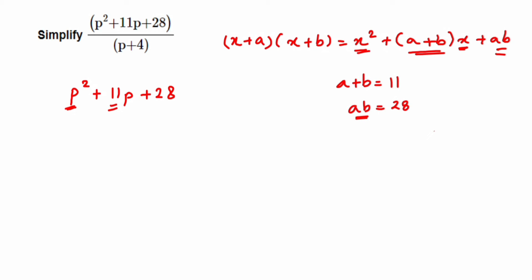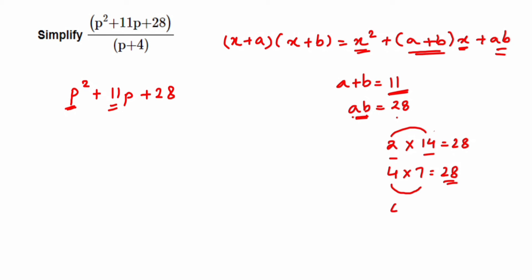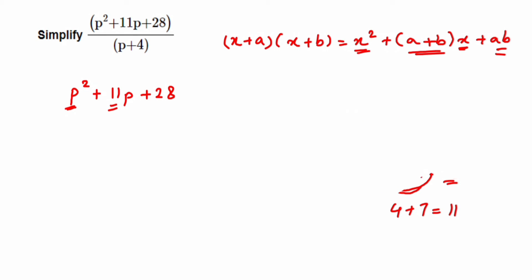For a × b = 28: possible pairs are 2 × 14 = 28, and 4 × 7 = 28. If I take 2 and 14, then 14 − 2 = 12, not 11. But if I take 4 and 7: 4 × 7 = 28 and 4 + 7 = 11. That matches, so our two numbers are 4 and 7.